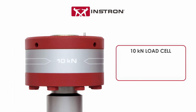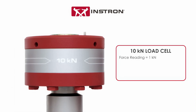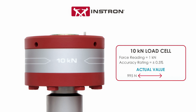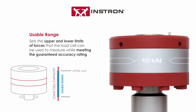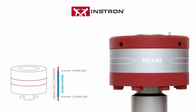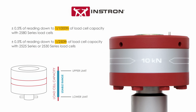In this scenario, if a 10 kilonewton load cell has a force reading of one kilonewton, an accuracy rating of plus or minus 0.5 percent would mean the actual value is guaranteed to be any value between 995 and 1005 newtons. The usable range sets the upper and lower limits of forces that the load cell can be used to measure while meeting the guaranteed accuracy rating. This is represented as a fraction of the load cell capacity in our specifications.